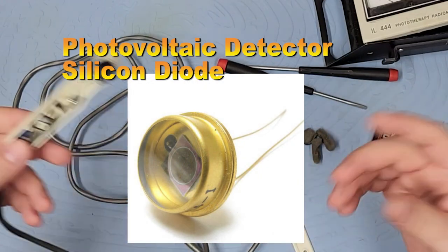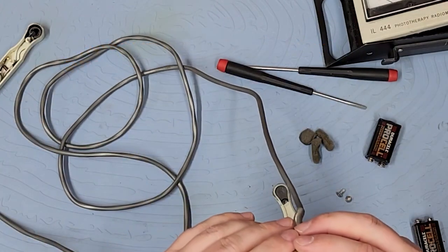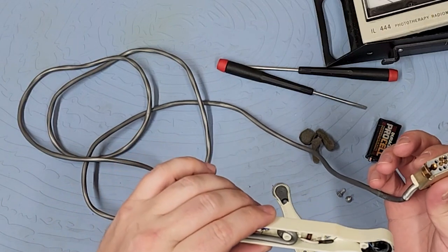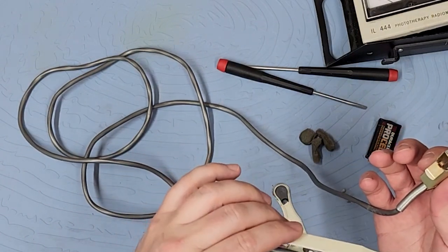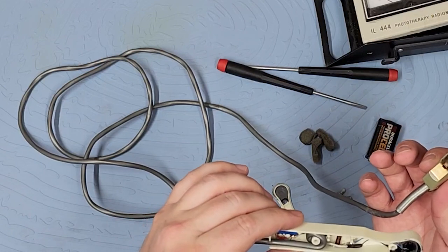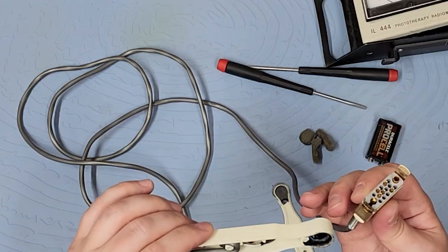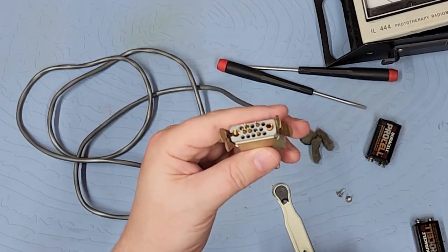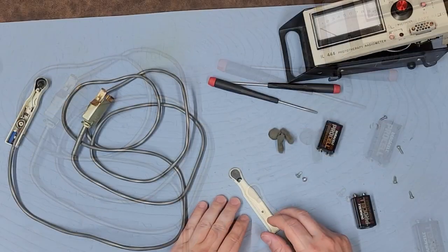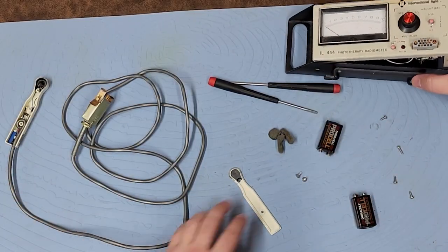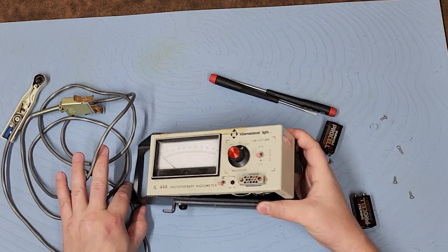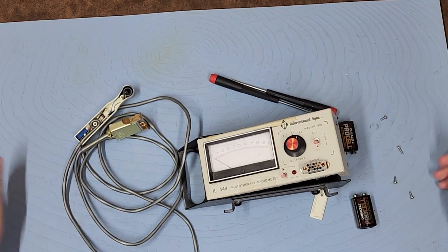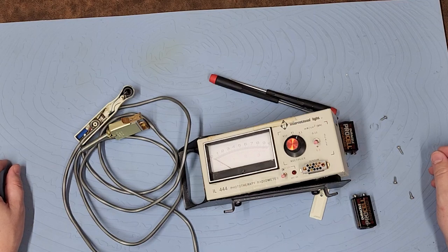This connector right here is like second to none considering there's only two wires inside this case. One, two - I got a resistor and a capacitor and two wires that go up to the sensor, and I got all these wires. So that is a 1970s phototherapy radiometer. How crazy is that?